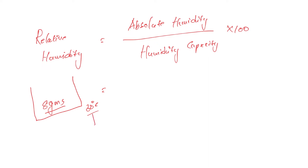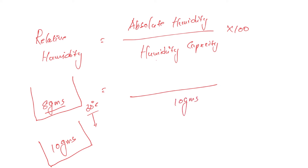But this unit volume of air at 30 degrees Celsius has a capacity of 10 grams. The capacity is 10 grams, but the unit volume of air contains 8 grams. So relative humidity is 8 divided by 10, which is 4/5 multiplied by 100 — approximately 80 percent.